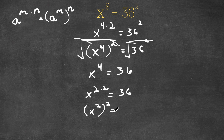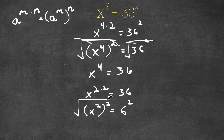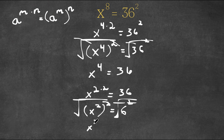And now this is equal to — I'm going to rewrite 36 as 6 squared. And now I'm going to take the square root on both sides once again. These two cancel out, these two cancel out, and I'm left with x squared is equal to 6.